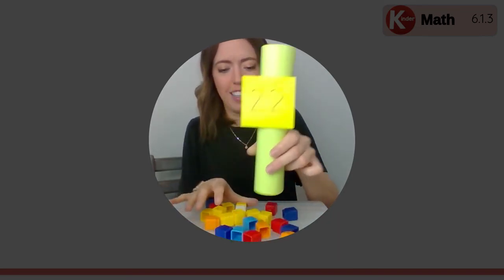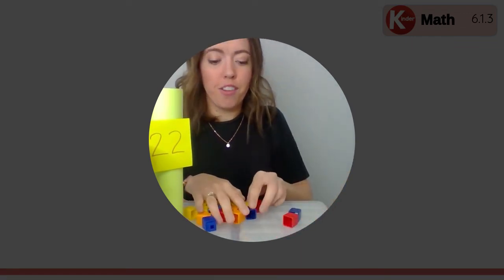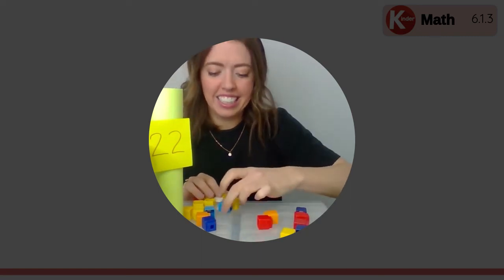Here they are. Let's check again to make sure there's 22 cubes. Okay, let's count by twos this time: two, four, six, eight, ten, twelve, fourteen, sixteen, eighteen, twenty, twenty-two. This was 22 cubes.